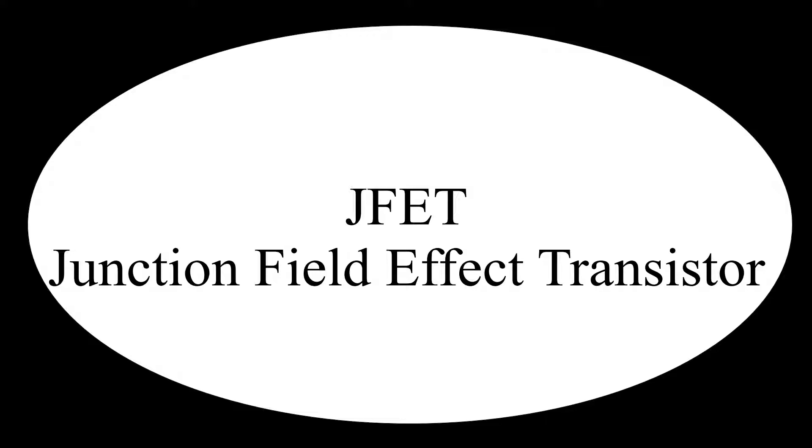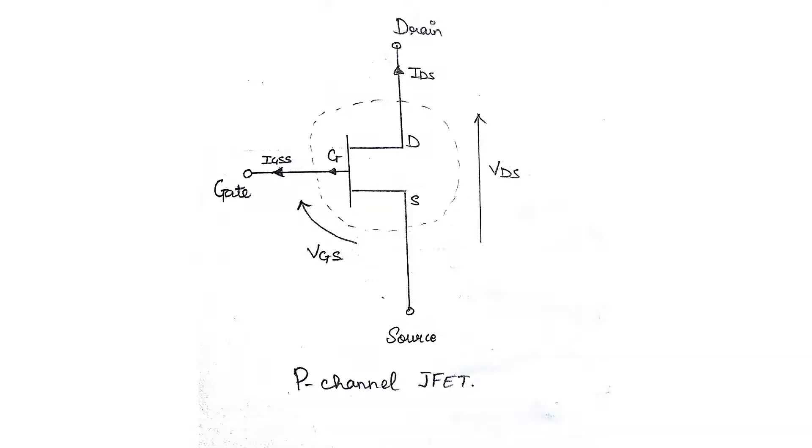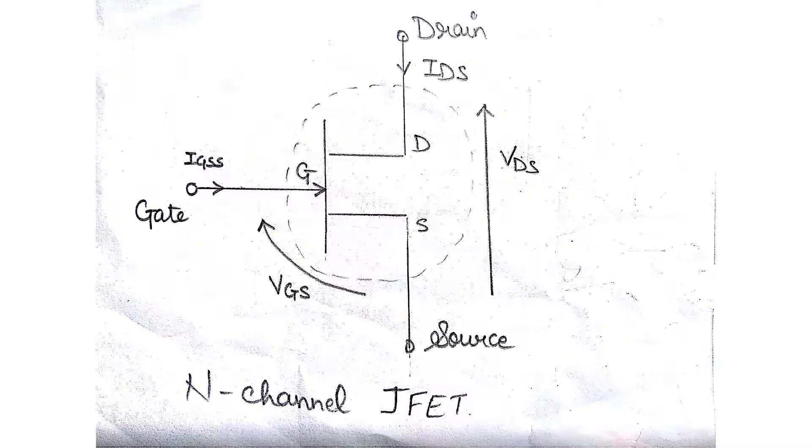It consists of a section of silicon whose conductance is controlled by the electric field. The section of silicon through which current flows is called the channel, and it consists of either N-type or P-type silicon. The connections at either end of the device are known as the source and the drain. The electric field to control the current is applied to a third electrode known as the gate.